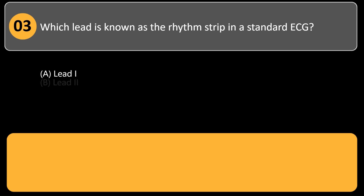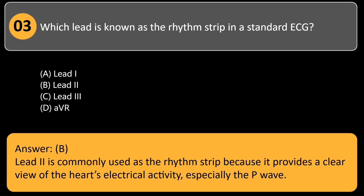Which lead is known as the rhythm strip in a standard ECG? A. Lead I. B. Lead II. C. Lead III. D. AVR. Answer: B. Lead II is commonly used as the rhythm strip because it provides a clear view of the heart's electrical activity, especially the P-wave.